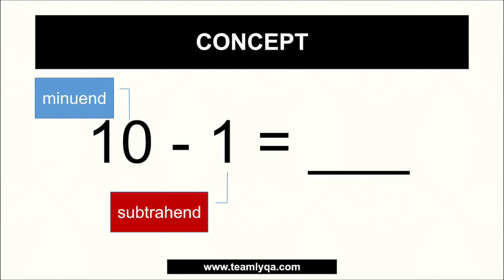Now, there are certain terms we need to brush up on. There are parts to the equation of subtraction. The first number is what we call the minuend, and the second number is what we call the subtrahend. So in 10 minus 1, 10 is the minuend and 1 is the subtrahend. What you subtract from is the minuend, and what you subtract is the subtrahend. A trick to remember: subtrahend starts with S and is the second number, while the minuend comes first.